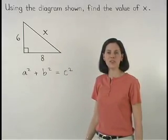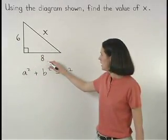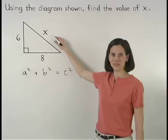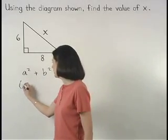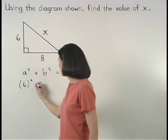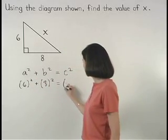So here, since our legs have lengths of 6 and 8 and our hypotenuse has a length of x, we can set up the equation 6 squared plus 8 squared equals x squared.